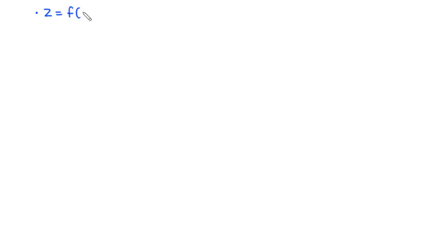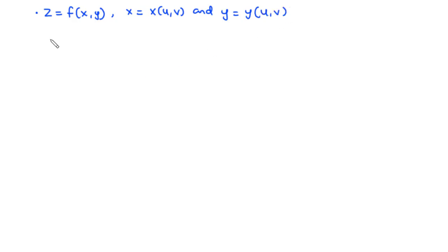Let's consider another form of the chain rule for partial derivatives of multivariable functions. Assuming that we have z as a function of two variables x and y, and then x and y are also functions of two variables u and v. So we have x equals x of u, v, and y equals y of u, v. Then we have the composition z equals f of x(u,v), y(u,v), which expresses z as a function of two variables u and v.